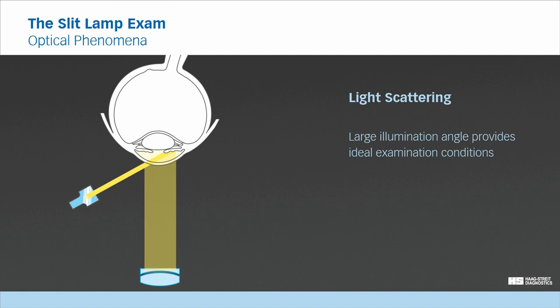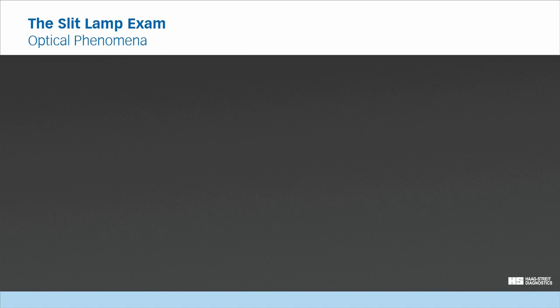Light scattering can best be observed when a large illumination angle is used. With a small illumination angle, the field where you can observe light scattering is restricted. Therefore, in most cases, you will create light scattering with an illumination angle of greater than 45 degrees.